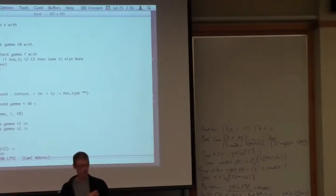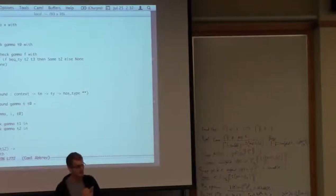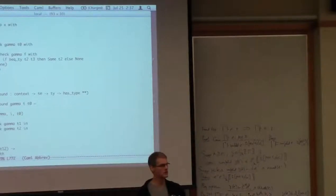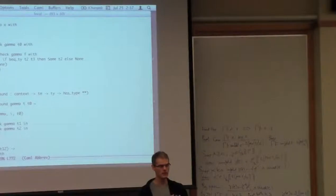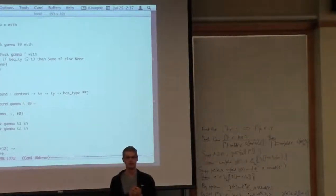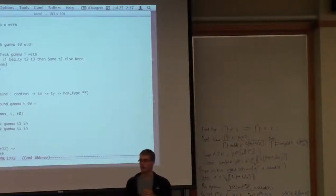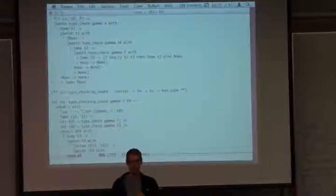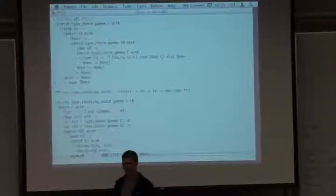And then the other little assignment is a thought exercise. So, we extracted a function from the normalization proof, and that function normalizes lambda terms. It promises to, but it doesn't do it using the step relation. So, how does it do it? So, how does this normalization function that we extracted work computationally? And with that, I think it's been a long few days already, and we should take a little break before lunch. Thanks, everybody.